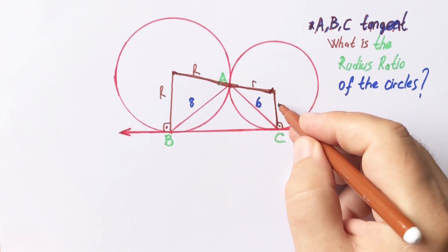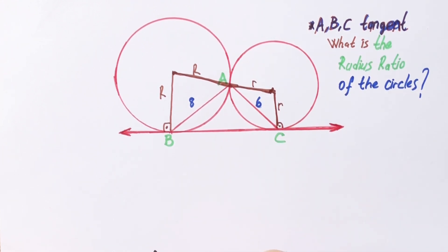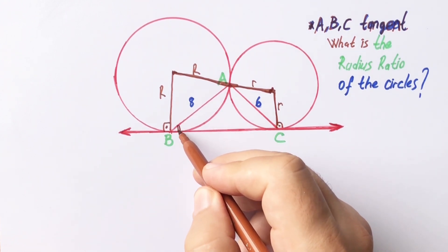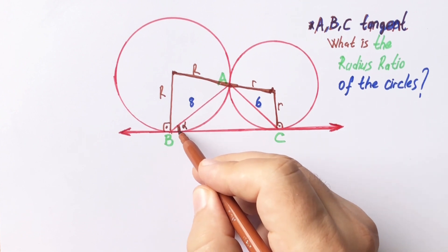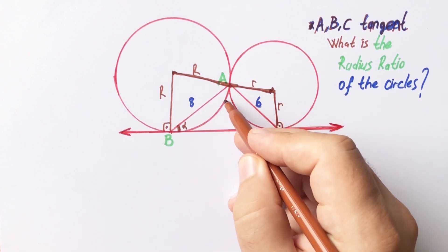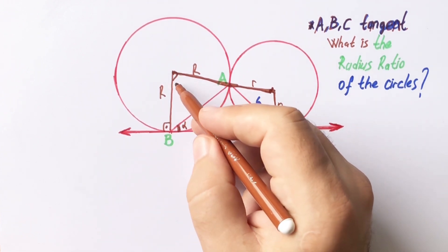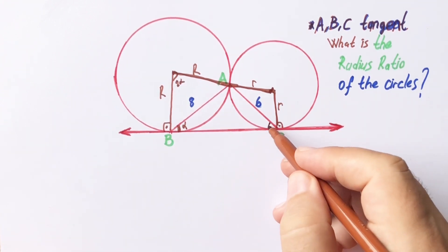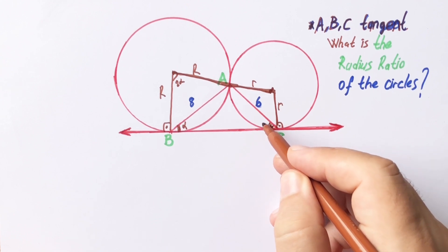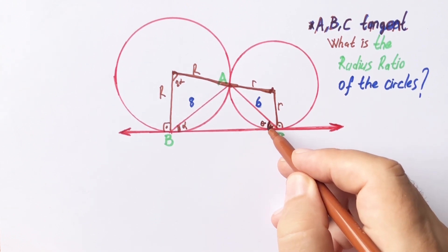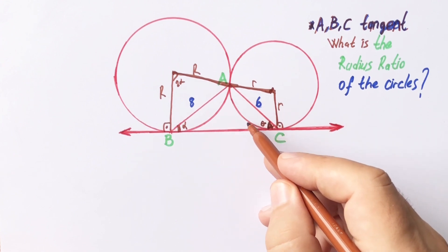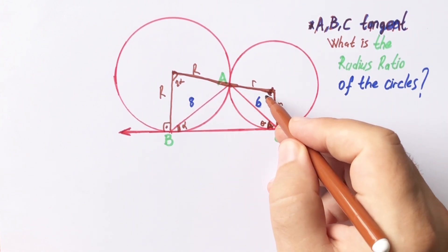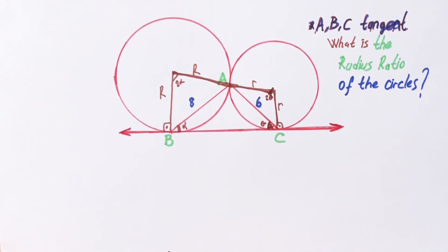Let's call r the small circle radius and let's call this angle alpha. This arc must be 2 alpha, therefore the center angle must be 2 alpha. Let's call here theta. This arc must be 2 theta, so the center angle must be 2 theta.